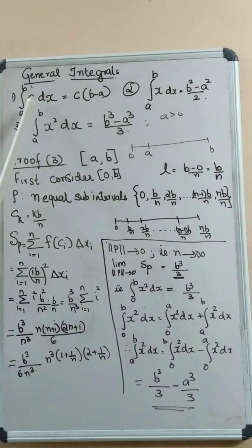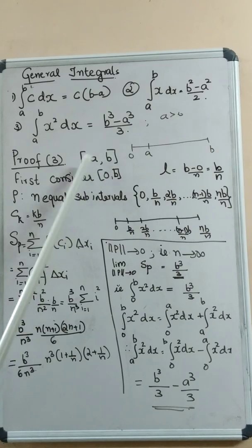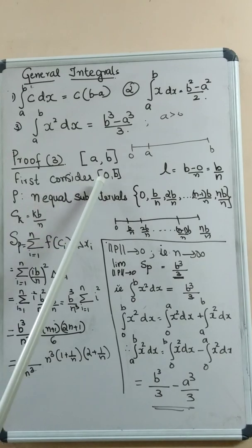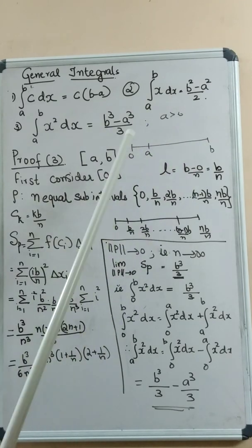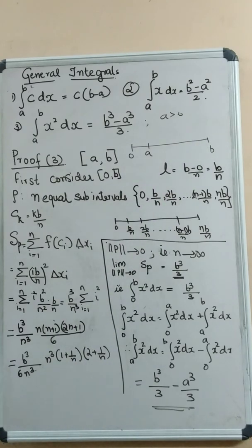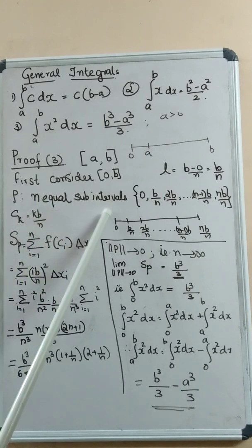We will prove the second and third results. We have to integrate the function f(x) = x squared over the closed interval from 0 to B. Let P be a partition of the closed interval [0, B] such that the closed interval [0, B] is divided into N equal sub-intervals.